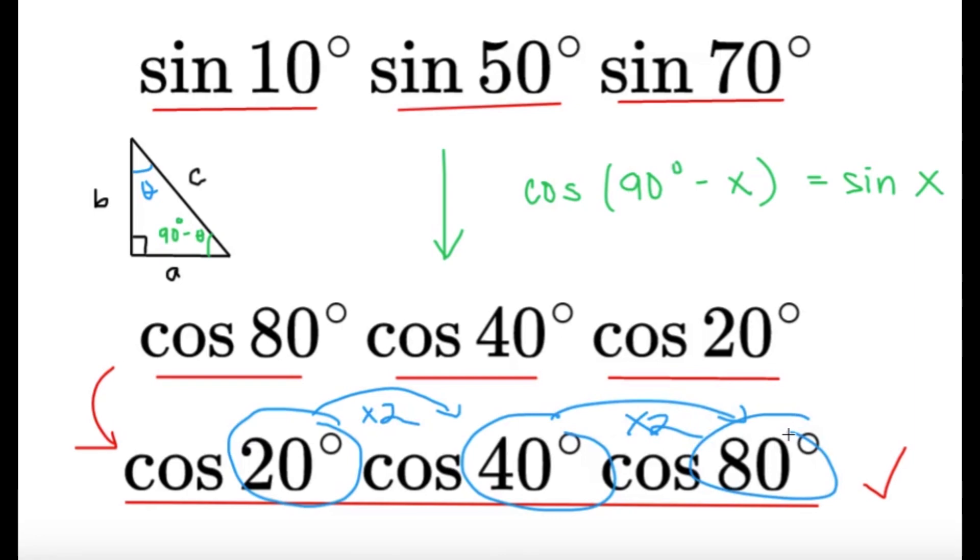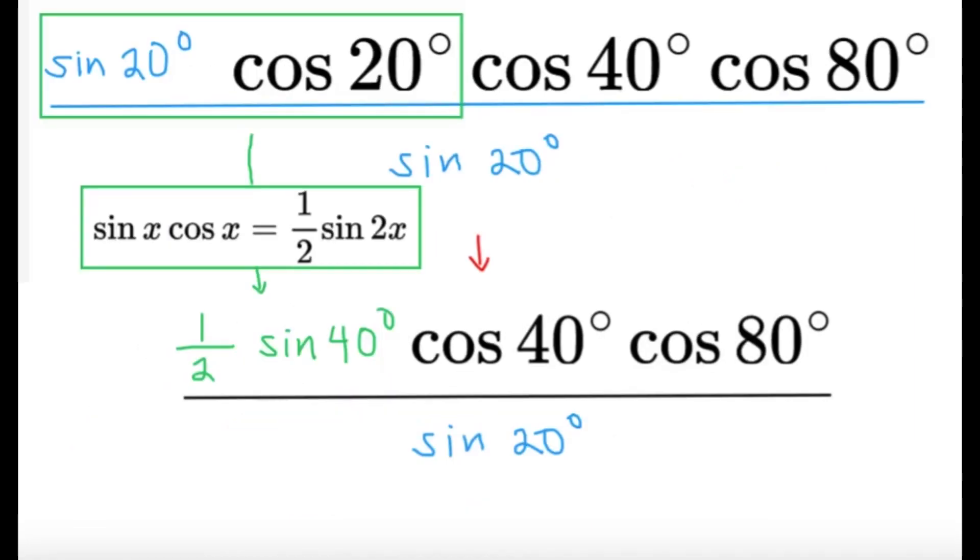Therefore, we would generally use the trick here of multiplying sine 20 degrees to the numerator and the denominator, because we would be able to use the double angle identity. So, recall the double angle identity, but divide both sides by 2, we're going to end up with this equation. So, sine x, cosine x, that's going to be equal to one-half sine 2x. All right? Now, one-half sine 2x, for sine 20 degrees, cosine 20 degrees, that's going to become one-half sine 40 degrees, as you can see here.